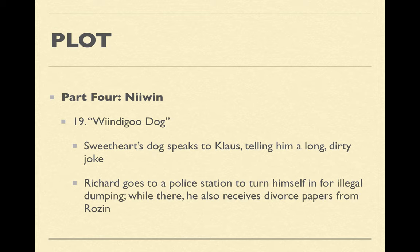A disheveled, desperate Richard and Klaus enter the bakery, and Sweetheart walks out with Klaus — she needs him to free her of his own accord. The next chapter has the dog tell Klaus a long dirty joke. Richard then goes to a police station to turn himself in for illegal dumping and receives his divorce papers. Just as Klaus must atone by freeing Sweetheart, Richard can't simply run from the bad things he's done — a theme throughout the novel, going back to Scranton Roy.